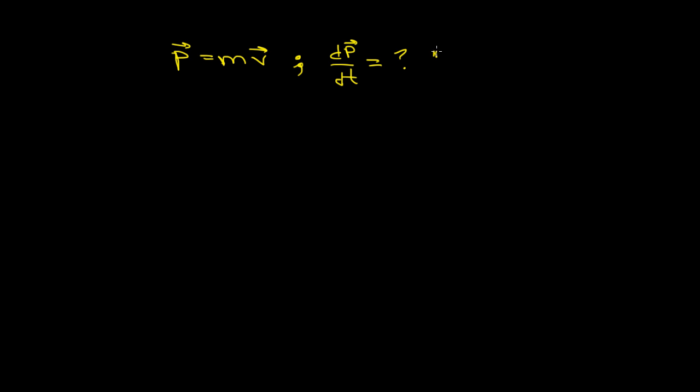So first we're going to assume that m is constant. Most of the time it's close enough to being constant that we can call it a constant. So we're going to take the derivative of momentum with respect to time. That's going to be equal to the derivative of the mass times the velocity with respect to time. Mass is constant, so we can pull that out, and we get m times dv/dt. But dv/dt is equal to a. Right? We learned that in previous videos that the derivative of the velocity vector is equal to the acceleration vector.